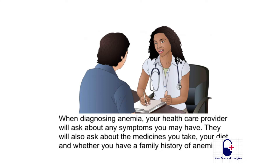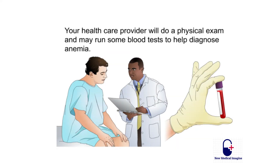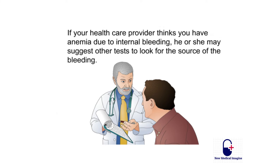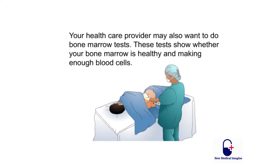When diagnosing anemia, your healthcare provider will ask about symptoms, medicines you take, your diet, and whether you have a family history of anemia. They will do a physical exam and may run blood tests. If internal bleeding is suspected, other tests may be suggested to locate the source. Bone marrow tests may also be done to show whether your bone marrow is healthy and making enough blood cells.